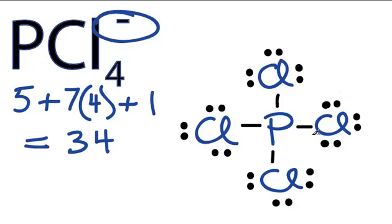That means we have two more, and all of the chlorines have octets. So let's stick those last two right here on the phosphorus in the center.